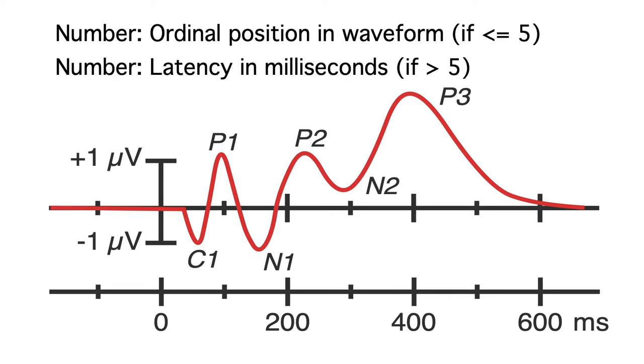In other cases, the number indicates the latency in milliseconds. For example, the visual n1 often peaks around 170 milliseconds, so it would be called n170. If the number is less than 5, you can assume it's the ordinal position. If it's greater than 5, you can assume it's the latency in milliseconds.